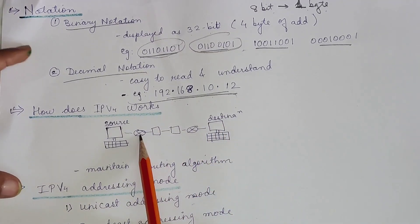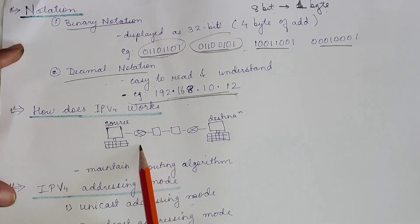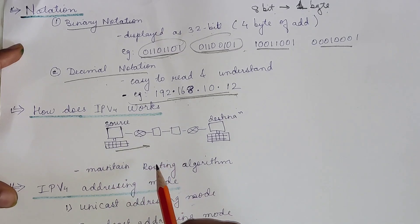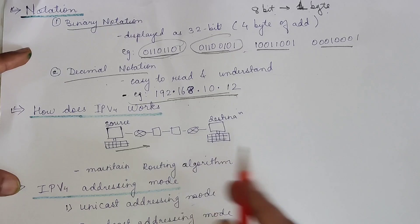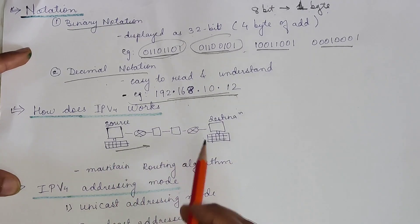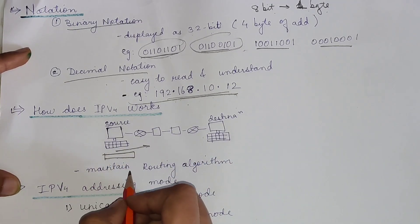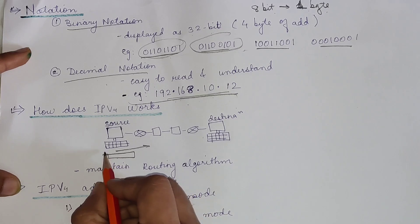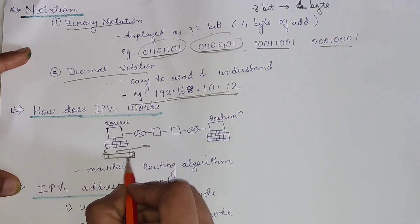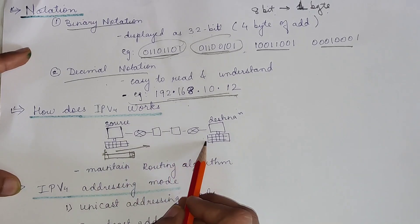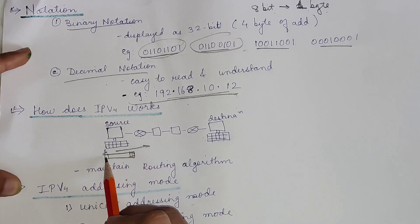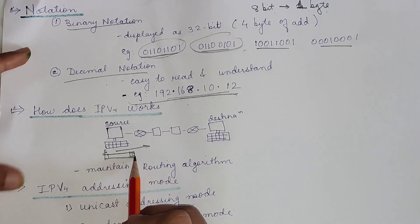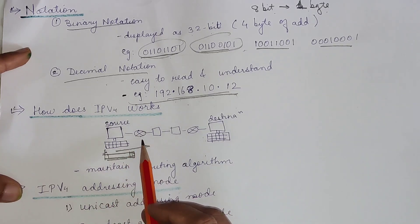How does IPv4 actually work? When a device sends data over the Internet, it attaches the IPv4 source address and the destination address, both packed into one packet. We attach both addresses because we need to know the destination, and the destination also needs to know where the data is arriving from.